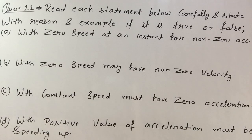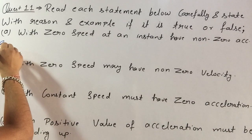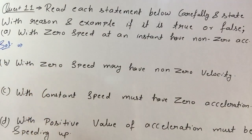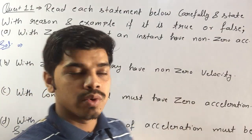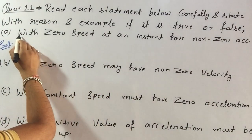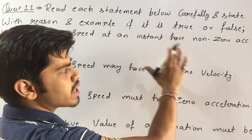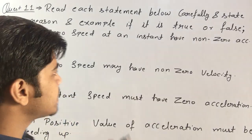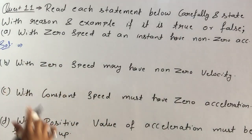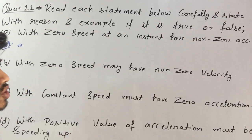Students, in this question we have to read each statement carefully and state with reason and example if it is true or false. The first statement asks: is it possible that at an instant your speed will be zero and acceleration will be non-zero?